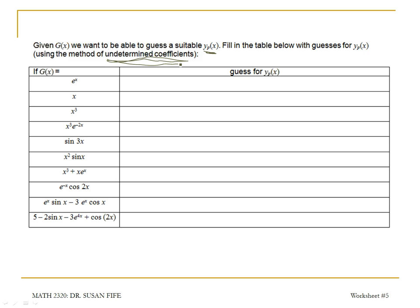We're going to use a method called undetermined coefficients. This means that we're going to know the forms of the terms, but we're not going to know what the actual coefficient is, so we're going to use letters to represent those. When we make a guess for our particular solution, that particular solution has to contain the form of any terms of g of x and their derivatives.